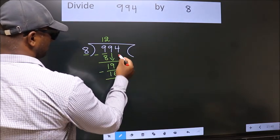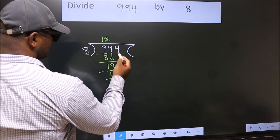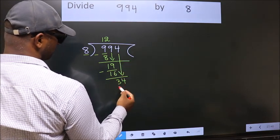After this, bring down the beside number. So 4 down. So 34.